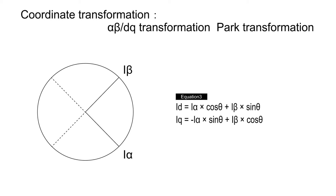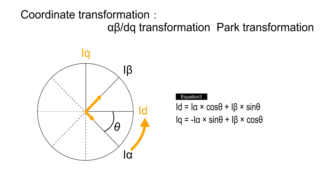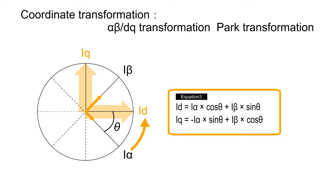This angle theta is an angle between the alpha-axis and d-axis. The values of I-alpha and I-beta calculated in phase transformation are transformed into rotational coordinates I-d and I-q respectively. In this step, we need to know a current value I-d of the magnetic component and a current value I-q of the torque component. Let the currents at stationary coordinates be I-alpha and I-beta, and the currents at rotational coordinates be I-d and I-q. Then I-d and I-q can be calculated using equation 3.